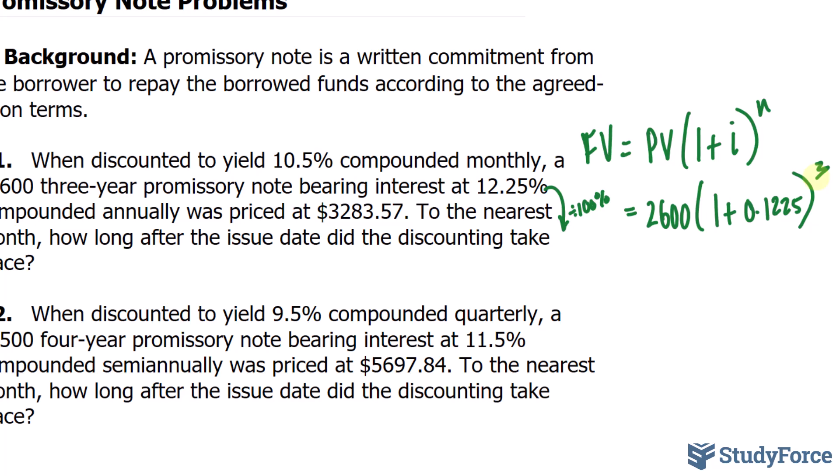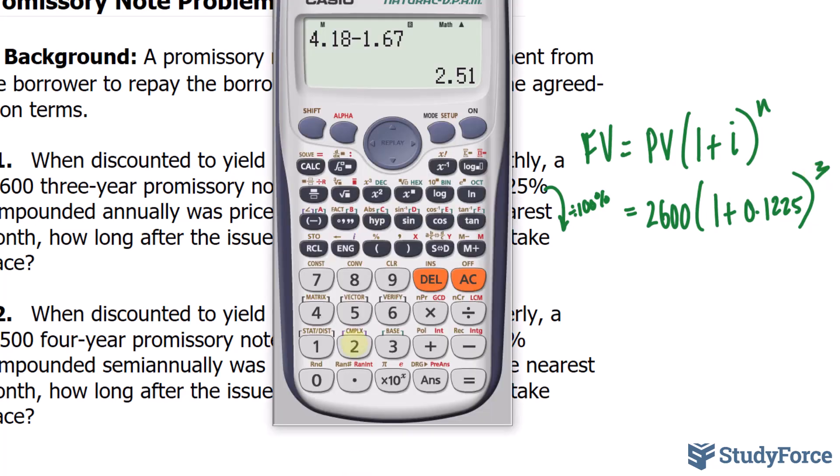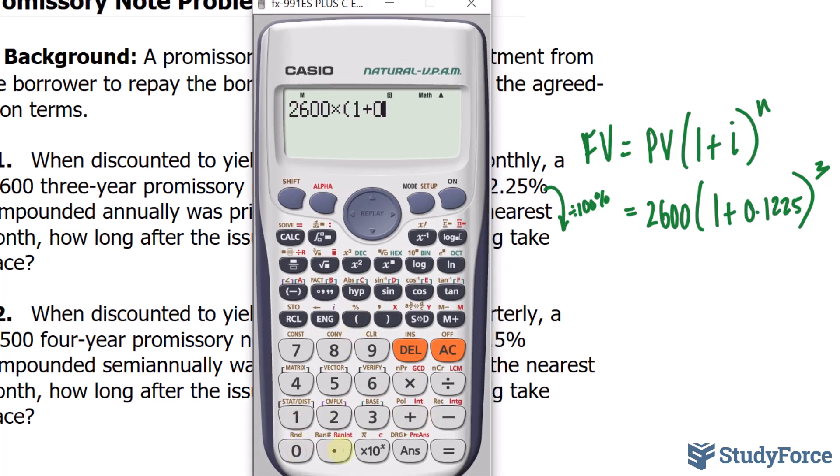So, using our calculator, $2,600 multiply by 1 plus 0.1225, raise that to the power of 3.